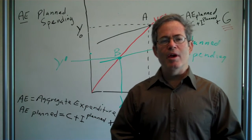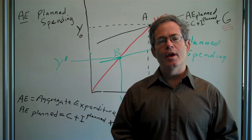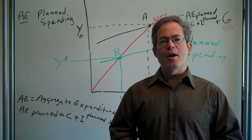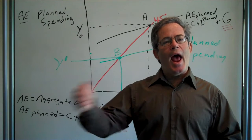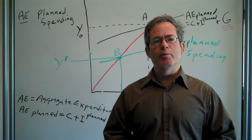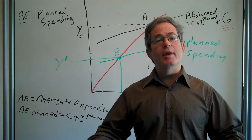Now Keynes' major insight is that in a very serious recession, the economy might settle down at a very low level of income and employment. And to get the economy out of the recession, the government might have to step in and spend money.